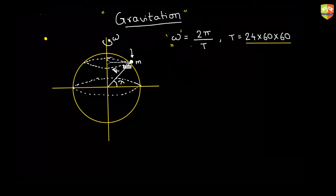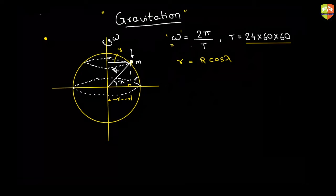The radius of the circle on which this mass is rotating — let's call it r — is equal to R cos(lambda). You get that by dropping a perpendicular on the equatorial plane. This distance from the axis to the object equals R cos(lambda).